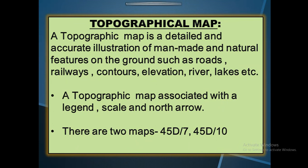Next, we need to know what a topographical map is. A topographical map is a detailed and accurate illustration of man-made and natural features on the ground. Man-made features include roads and railways, which are created by people. Natural features include contours, elevation, rivers, etc., which are created naturally.